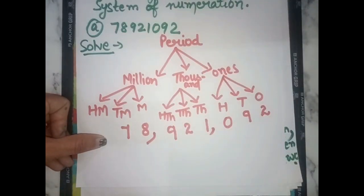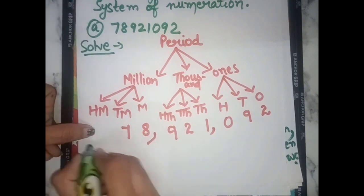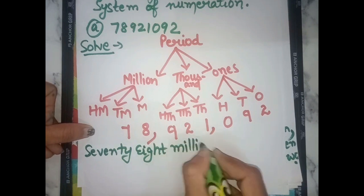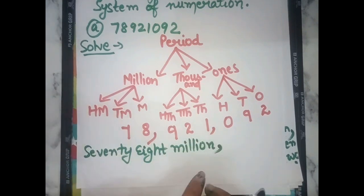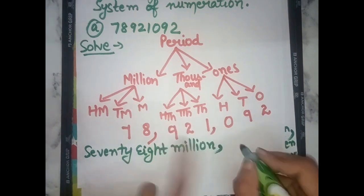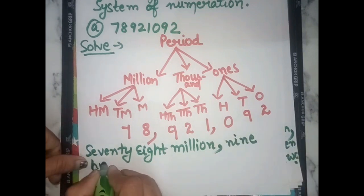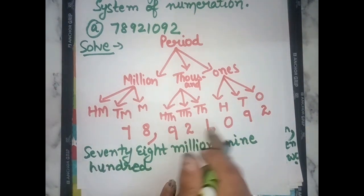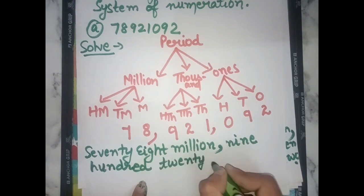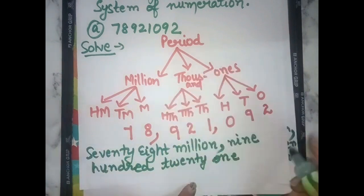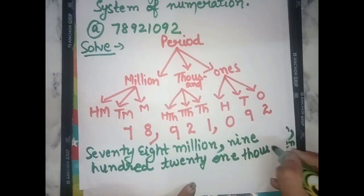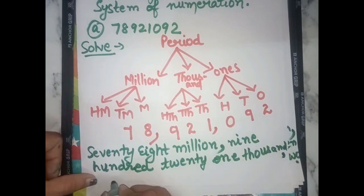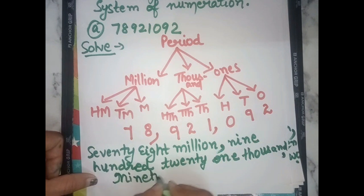The name according to International System Numeration: 78 million, nine hundred twenty-one thousand. The thousands period gives us 921 thousand, and the ones period gives us the remaining digits.